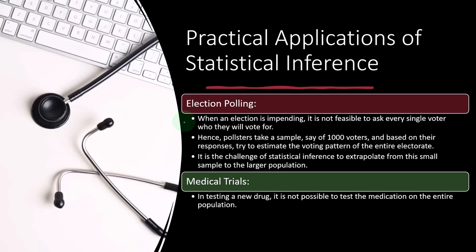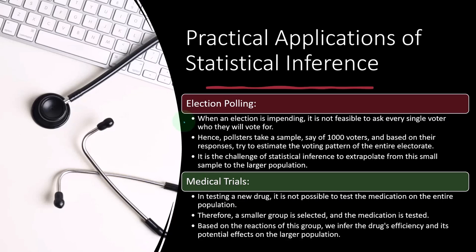Obviously, there's a lot more to the testing than this that we'll get into in future presentations, because you have things like a placebo effect. And when you get into pollster testing, you have things like whether you can reach the entire population and how exactly we're going to pick the sample. We'll get into all of those nuances in future presentations — they're not just minor things. But you get the general idea: based on the reactions of this group, we infer the drug's efficiency and its potential effects on the larger population.